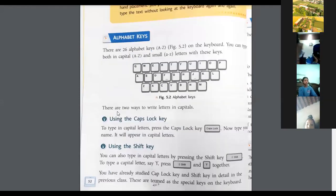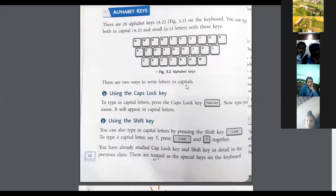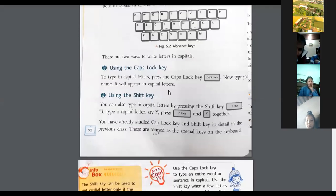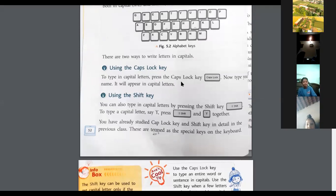There are two ways to write letters in capital letters. The first way is to use the Caps Lock key. Press the Caps Lock key and then type your name — it will appear in capital letters. If you want all letters in capitals, use the Caps Lock key.